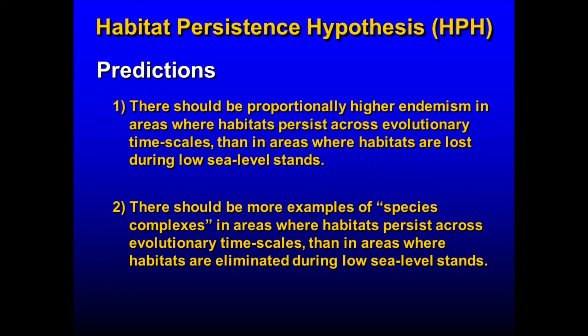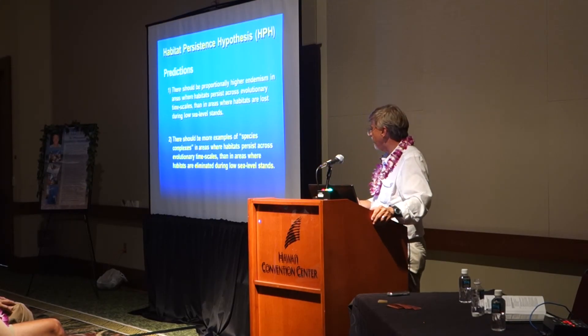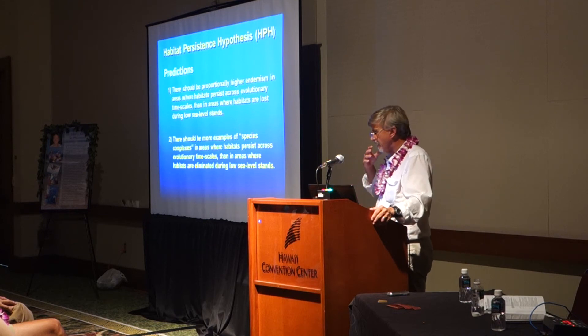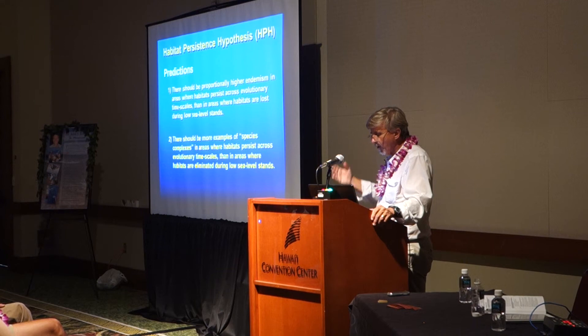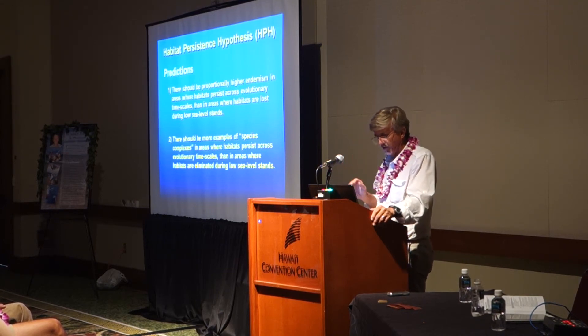The second prediction is that there should be more examples of species complexes — that is, sister species groups — in areas where habitats persist over evolutionary timescales than in areas where habitats are eliminated during low sea level stands. If you allow enough time for rare colonization events and rare distribution expansions to take hold, those subsequently cut off from the mother populations can have time to evolve into distinct species.